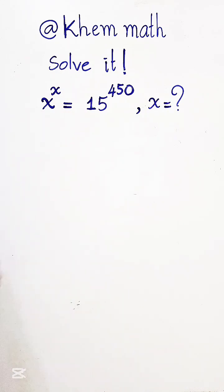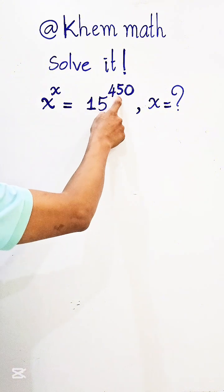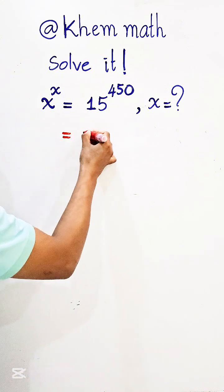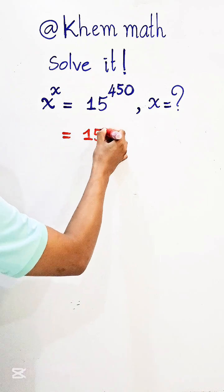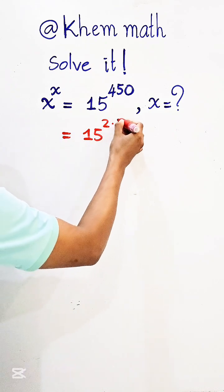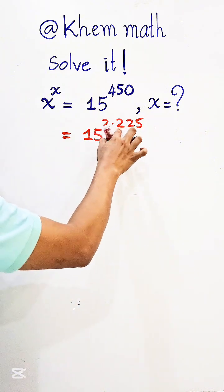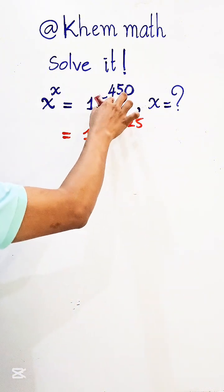Look at this now. See this, 15 power 450, I can write it equal 15 power 2 times 225. And here is 2 times 225 equals 450.